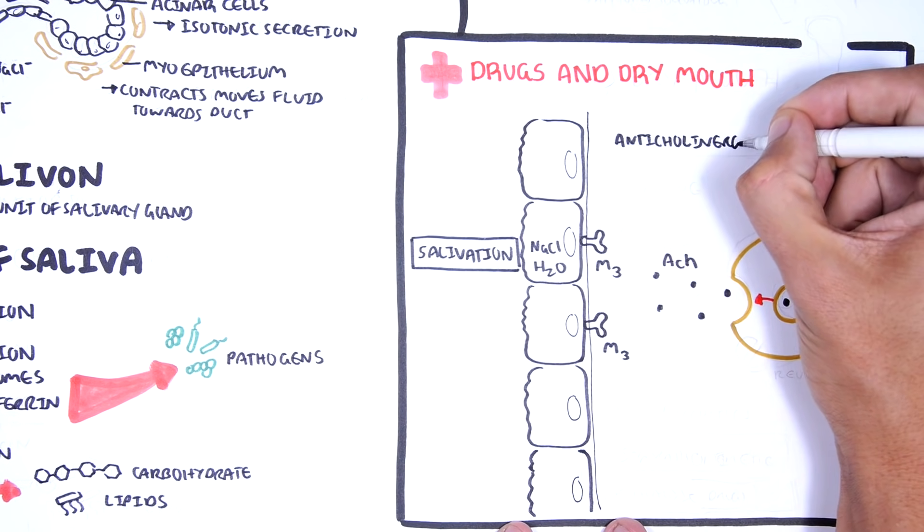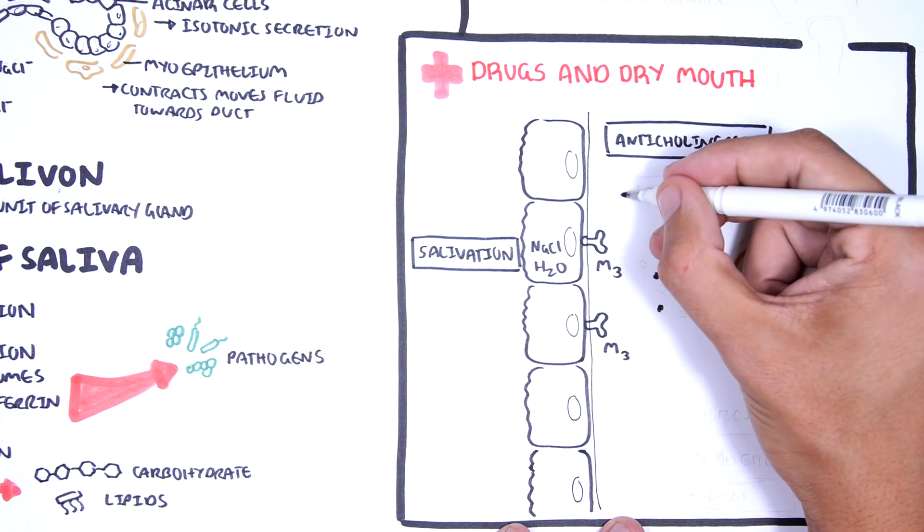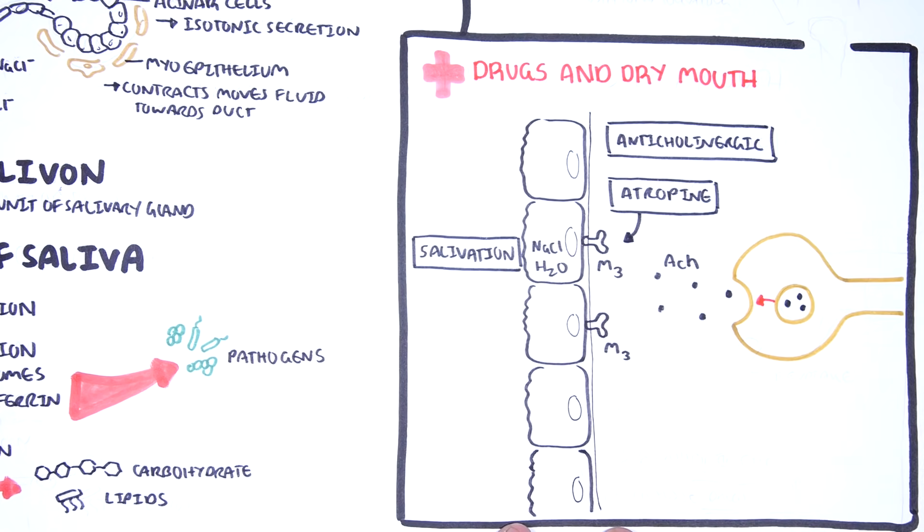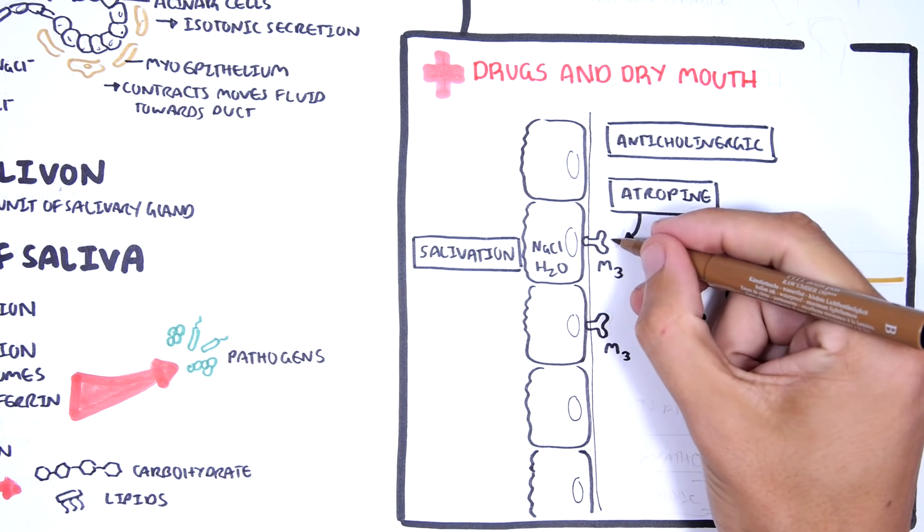Anticholinergics are drugs that block the action of acetylcholine. Atropine is one example. Atropine works by mimicking acetylcholine and thus it can bind onto this muscarinic receptor, preventing the actual acetylcholine from binding onto the receptor, thus causing a dry mouth.